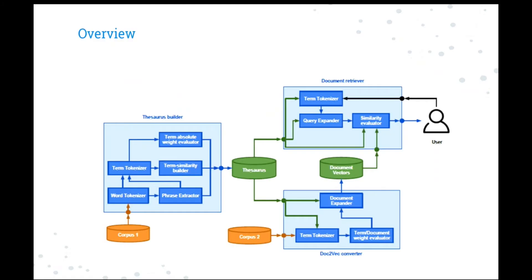This is the overview of our system. Basically, it has three components: Thesaurus Builder, Doc2Vec Converter, and Document Retriever. In the first component, we will build a thesaurus which includes all the necessary knowledge of our specific domain and supports the following two parts. In the second part, we will convert raw texts into high dimensional vectors. And in the last part, we apply the similar principle to a query and evaluate the similarity between the query and the documents. So I will introduce more detail in the following.